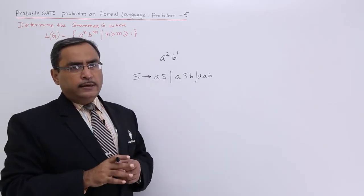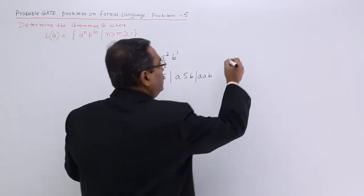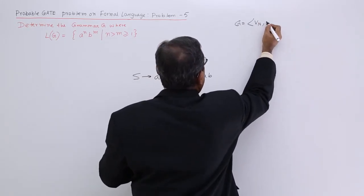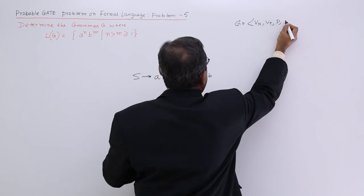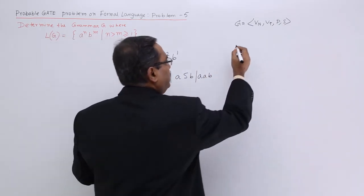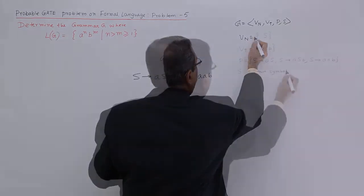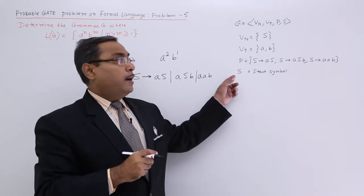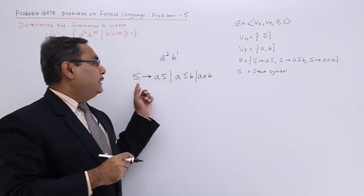From there we can easily get the VN, VT, P, S. Grammar G is equal to VN, VT, and P, S. Sometimes we write VT as sigma. In this way I can easily define this particular grammar VN, VT, P, S, and that is the production rule.